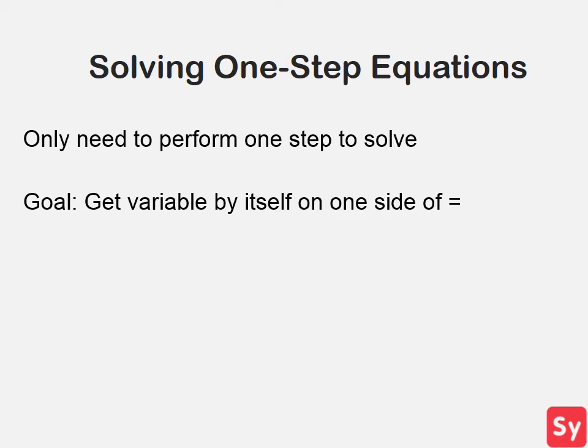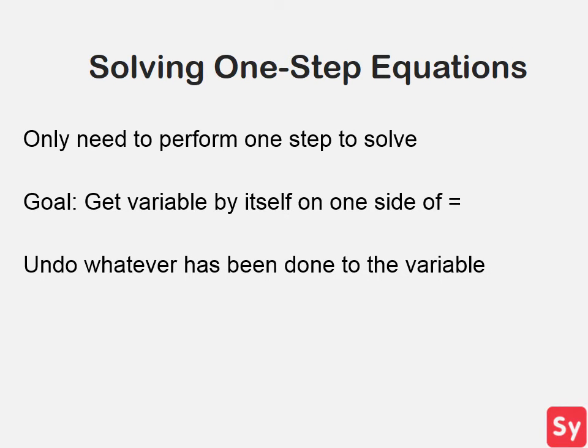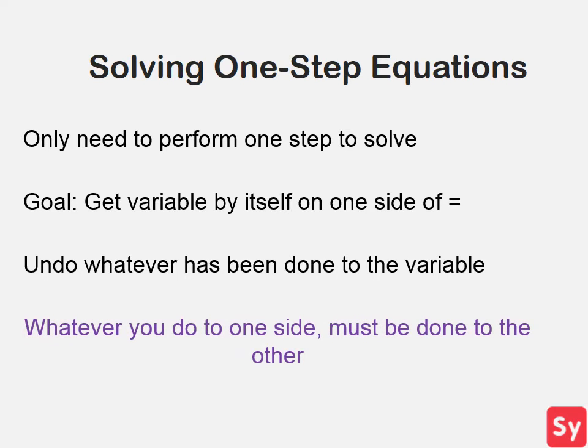The goal of a one-step equation is to isolate the variable on one side of the equation. In order to do that, you have to undo whatever has been done to the variable. When undoing what has been done to the variable, the most important thing to remember is whatever you do to one side, you must do to the other.